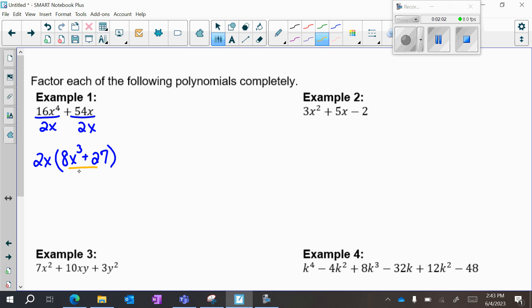So what's left over in here is a binomial, and everything is a perfect cube, so I'm going to use SOAP. I'm going to bring down the 2x on the outside. I'm going to set up a binomial times a trinomial: same sign, opposite sign, always positive.